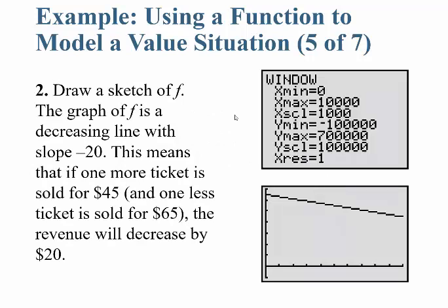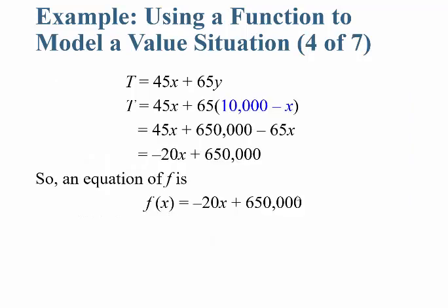When we sketch this graph, F is a decreasing line with slope −20. This means that if one more ticket is sold for $45 and one less for $65, the revenue decreases by $20 — which makes total sense, since the difference between the two ticket prices is $20. For example, if they sold all 10,000 seats at $65, they'd make the maximum, but every non-reserve seat they sell loses $20.